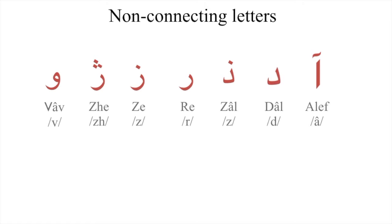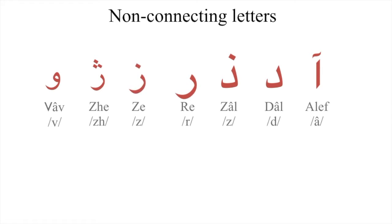The seven non-connecting letters are: Alef, Dal, Zal, Re, Ze, Je, and Vav.